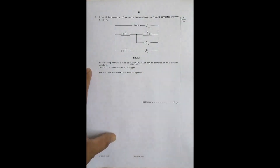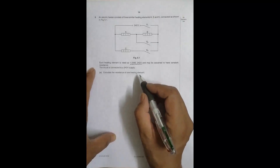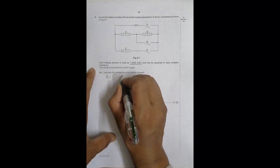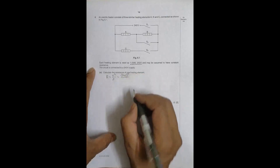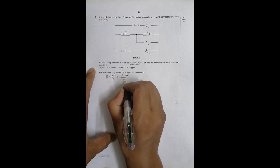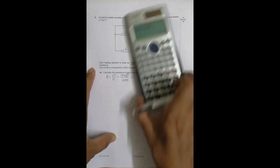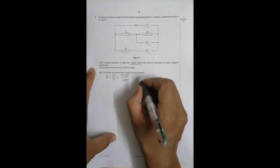Calculate the resistance of one heating element. As we've always stated, whenever a rating is given in watts and volts, the first thing we can do is find the resistance. The resistance of each element equals V squared divided by P. V is 240, so it's 240 squared divided by P, which is 1500 watts. This equals 38.4 ohms.